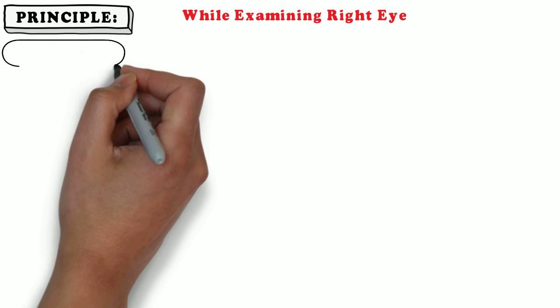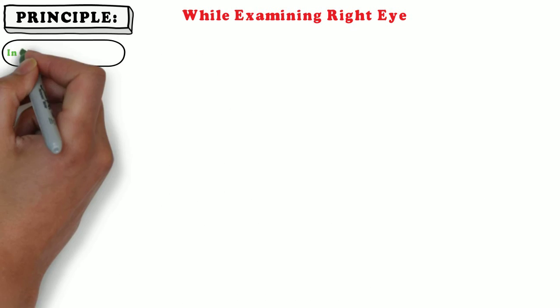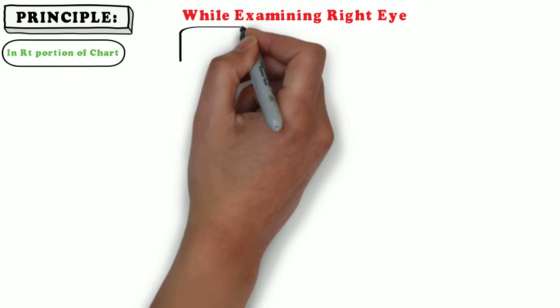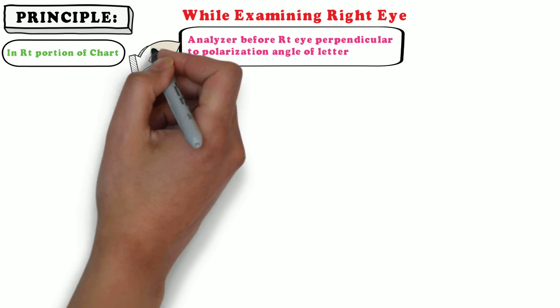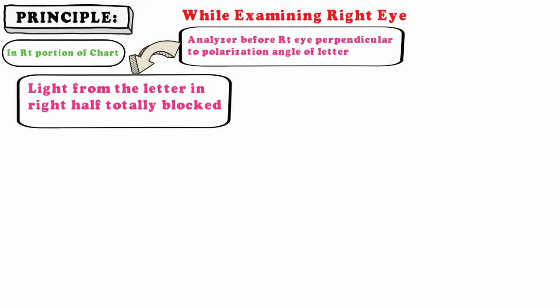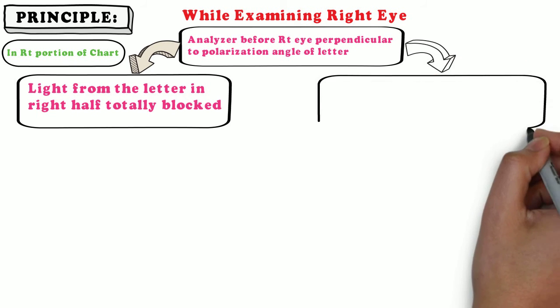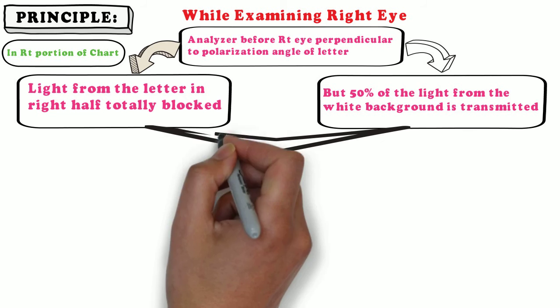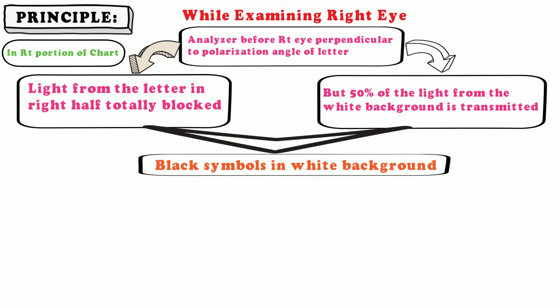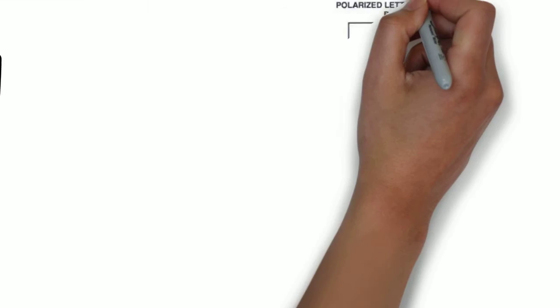Now let's study about the principle. While examining the right eye, let's see what happens in the right portion of the chart. The analyzer before the right eye is perpendicular to the polarization angle of the letter. Light from the letters in the right half is totally blocked, but 50 percent of light from the white background is transmitted. As a result, a black symbol in white background is produced.